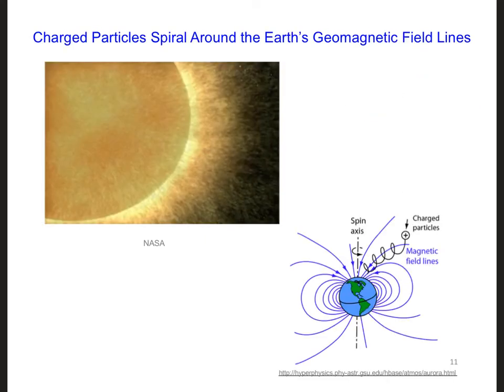Here's a nice diagram of that. So here they have a positive charged particle. Let's say that this red dot here is an electron instead. Then we're going to see it spin around the magnetic field line in the manner that we showed on the previous slide.